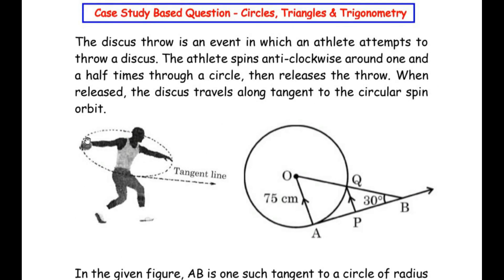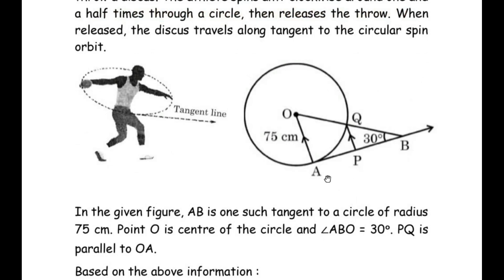Here an athlete is shown who is turning anti-clockwise one and a half times before throwing a discus. When he spins he makes a circle, and when he releases the discus, the discus moves as a tangent to the circle. So here AB is represented as the direction of the discus. The athlete's representation is shown in an equivalent figure. The radius of the circle is given as 75 cm, angle B is 30 degrees, and QP is parallel to OA. We need to find out the length of AB.